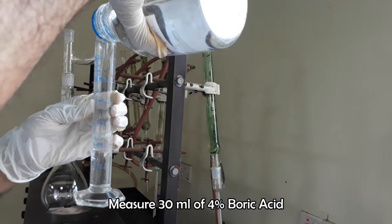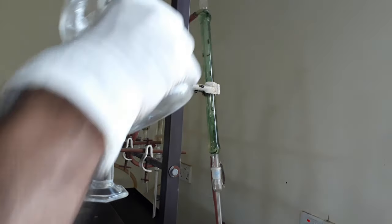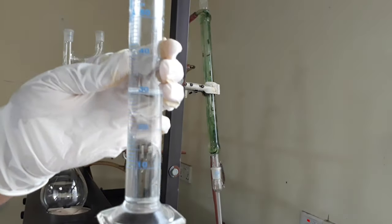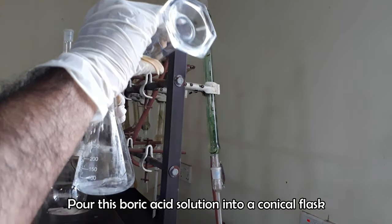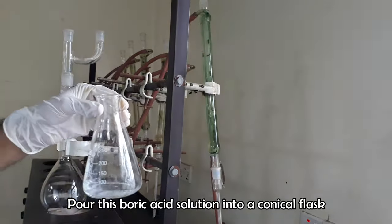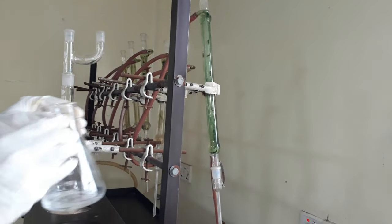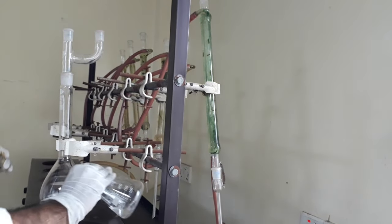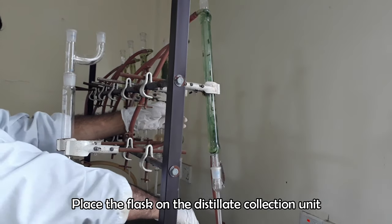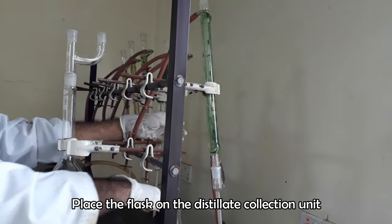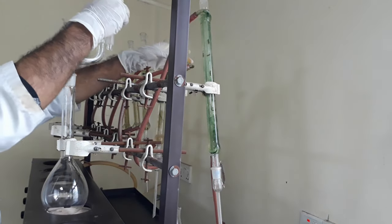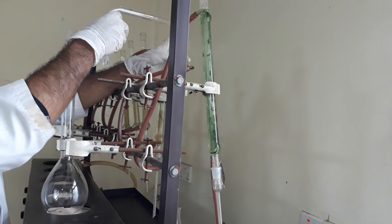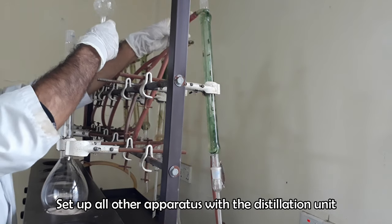Measure 30 ml of 4% boric acid and take into a conical flask. Place this conical flask in the distillation unit where the distillate will be collected. The distillate will be collected in the same flask that already contains 30 ml of 4% boric acid solution. Arrange and set all other parts of distillation unit.